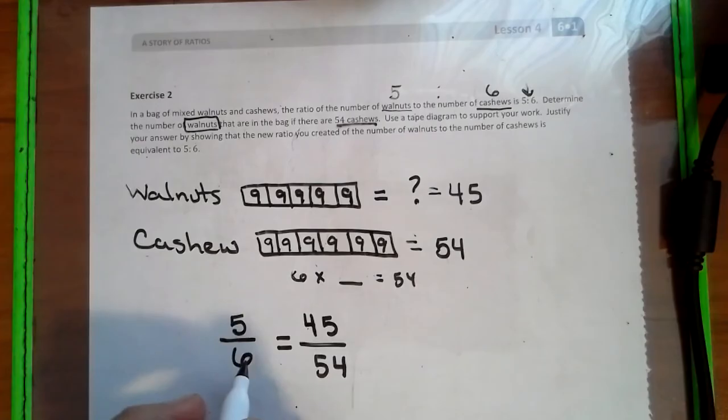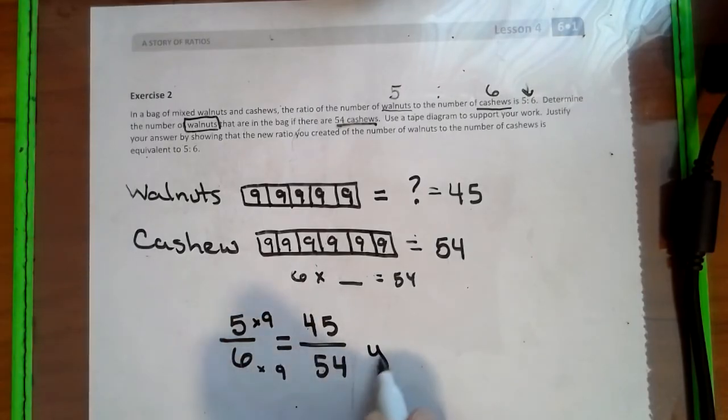So there's a couple of different ways we can do this. We can see how do we get from a 6 to a 54, which is multiplying by 9. We could do it to the top and see if it equals. And that would be a yes.